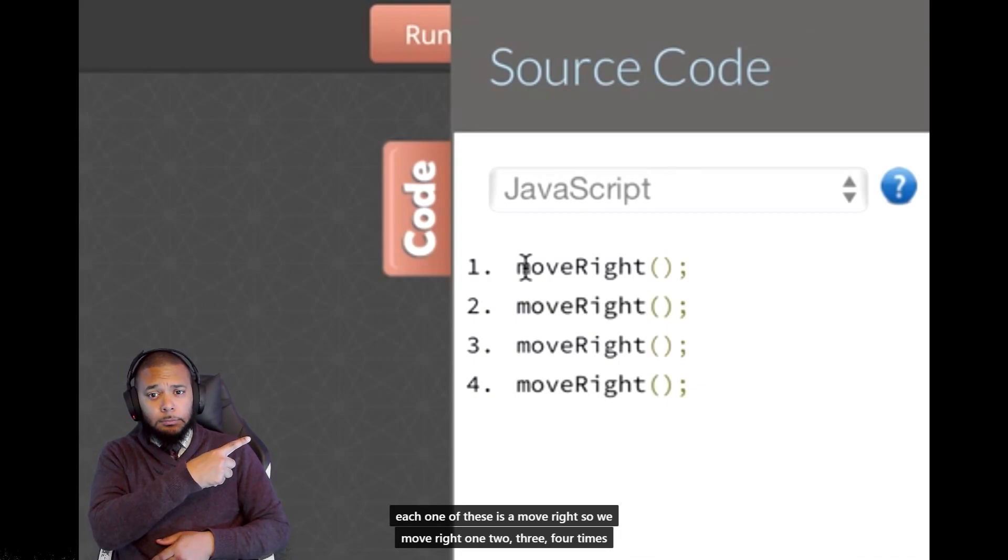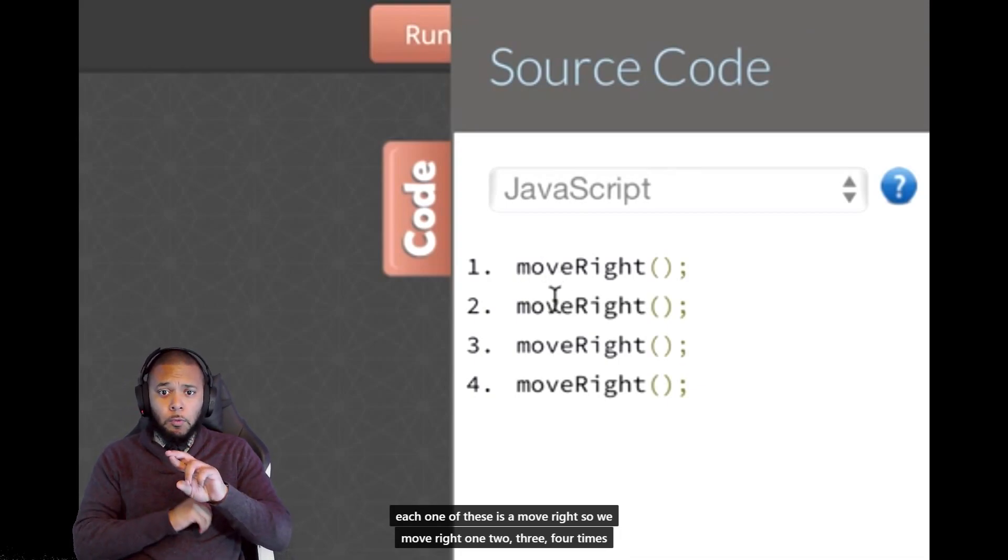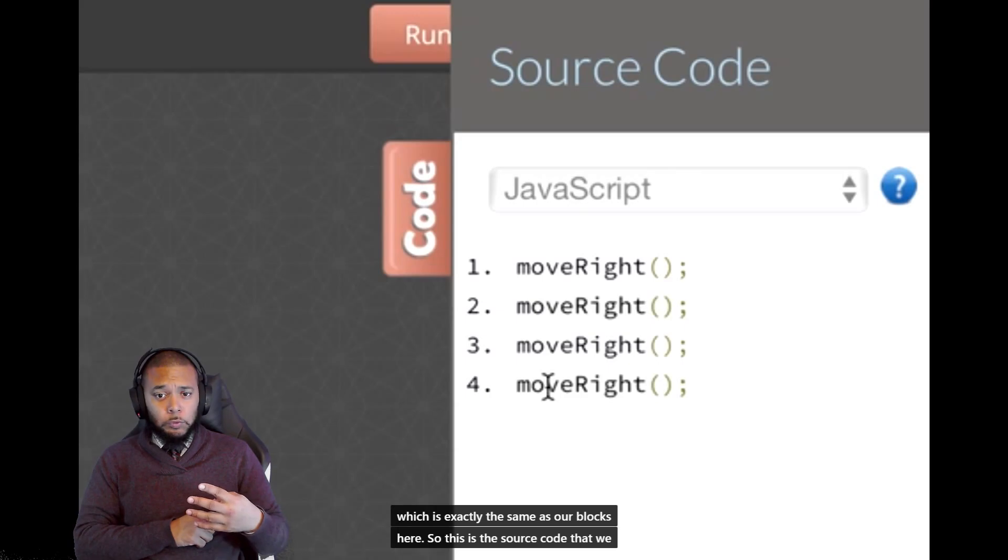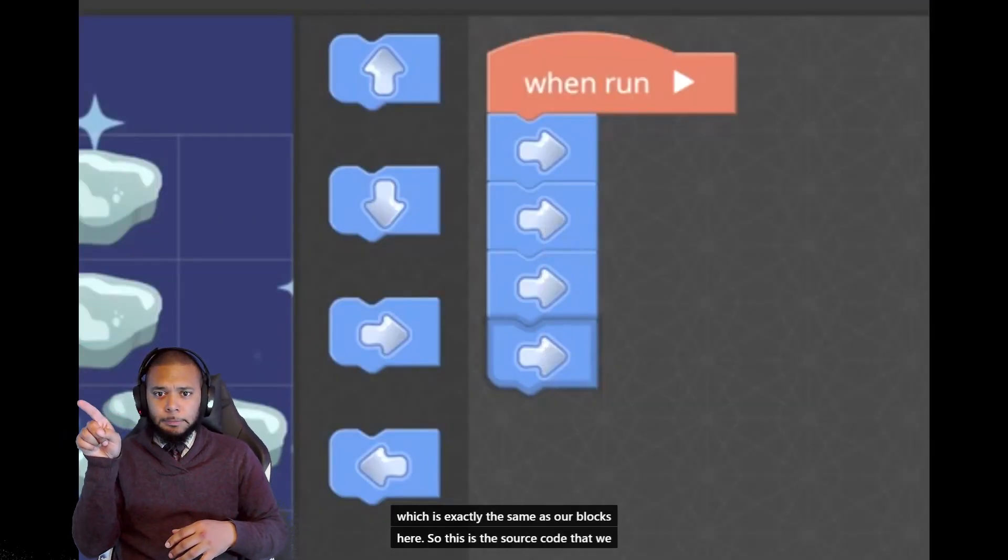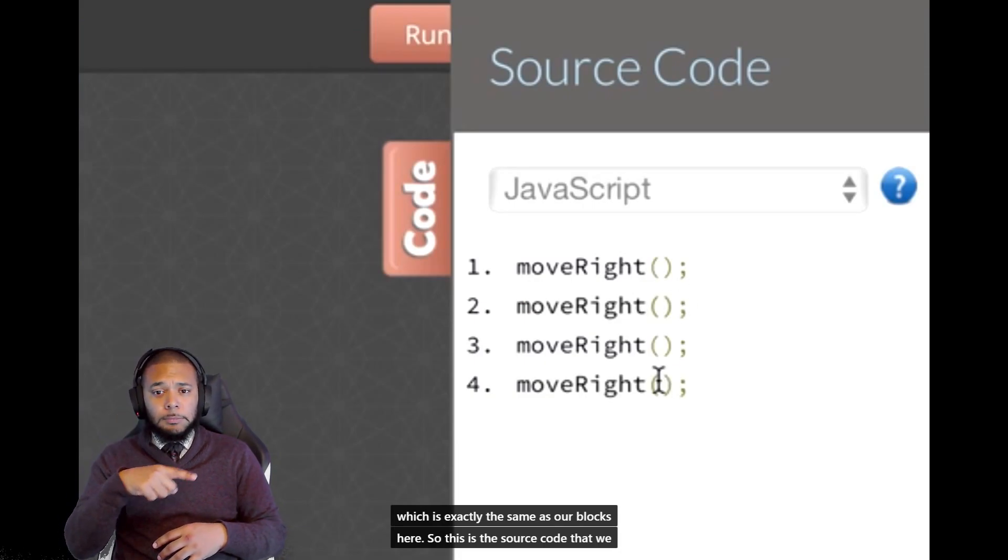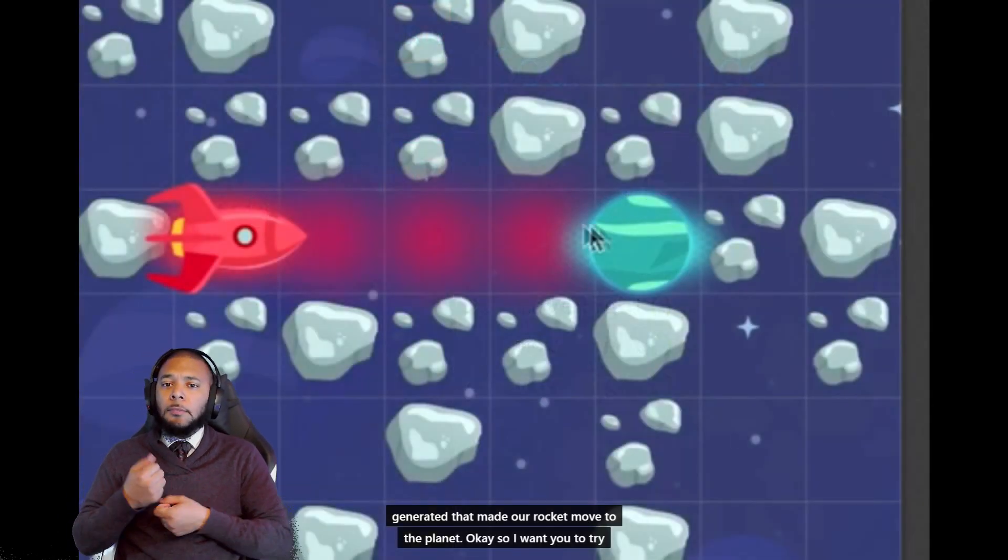So each one of these is a move right. We move right one, two, three, four times, which is exactly the same as our blocks here. So this is the source code that we generated that made our rocket move to the planet.